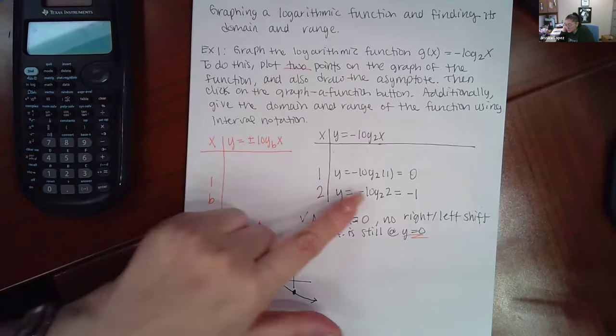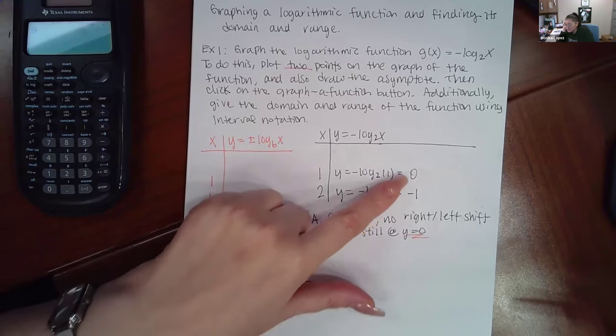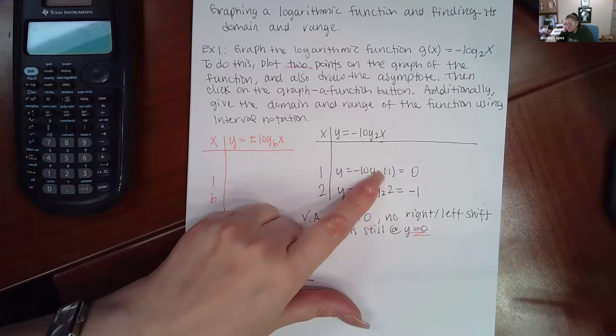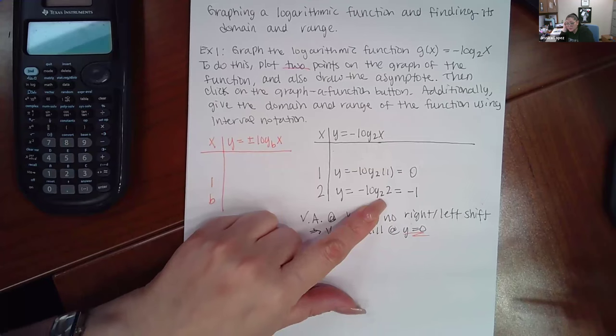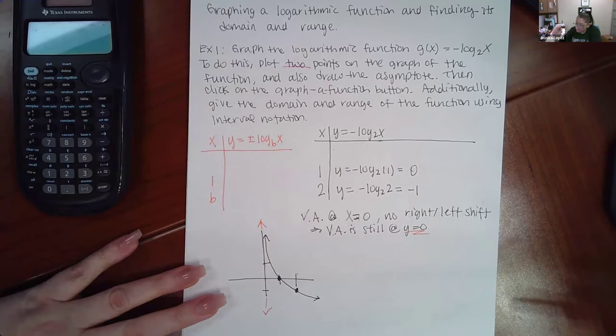So I plugged in one, I plugged in two, and I got these values here. Now I got these values using the log properties. But if you're not sure how to use the log properties, you can type it in your calculator.